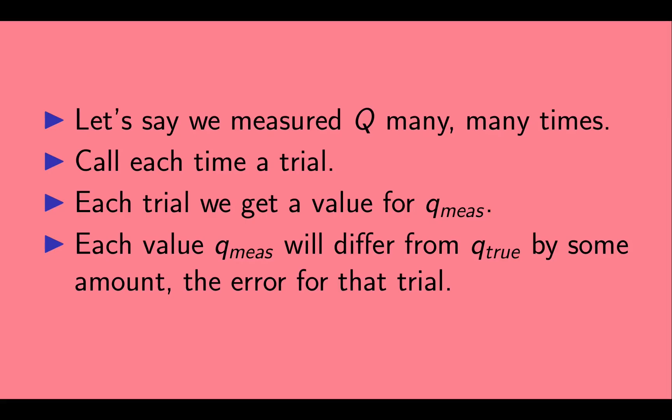Let's say we measured q many, many times. Call each time a trial. In each trial, we get a value for q measured. Each value q measured will differ from q true by some amount, the error for that trial.